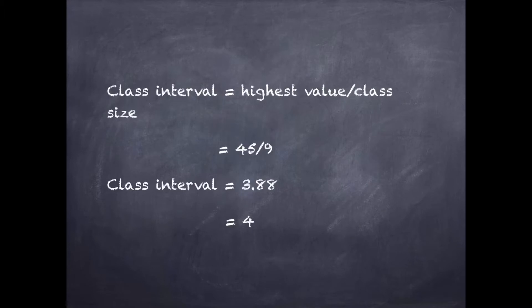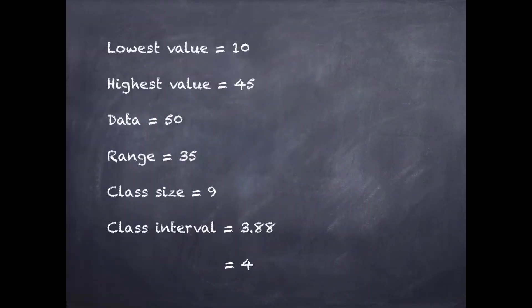Next we have the class interval. Class interval is the size of each class into which a range of a variable is divided. The formula for class interval is highest value divided by class size, which is 45 divided by 9, equal to 3.28, rounded up to the nearest whole number, which is 4.